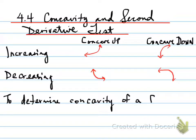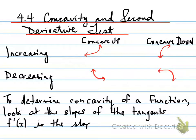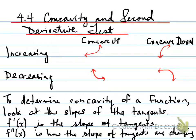To determine the concavity of a function, we have to look at the slopes of the tangents. F'(x) is the slope of the tangents. F''(x) is how the slope of the tangents are changing. So we can use F''(x) to see how the slopes of the tangents are changing to determine the concavity.